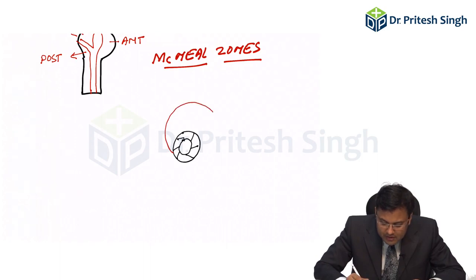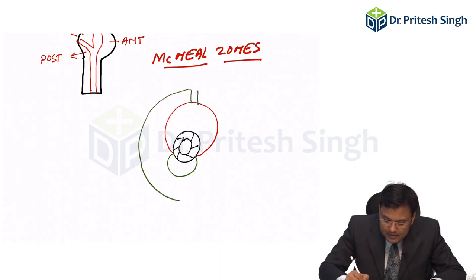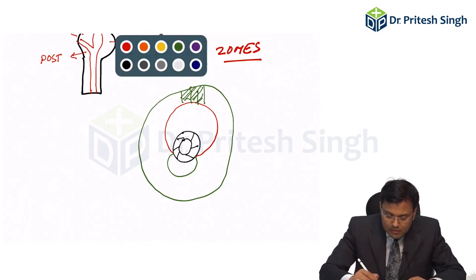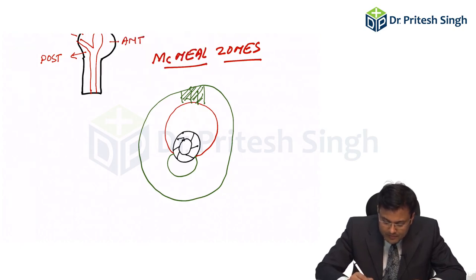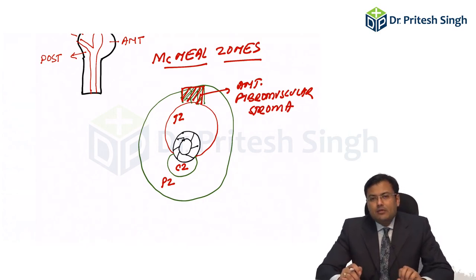Two-thirds of this urethra is covered by the transition zone. Usually, one-third is covered by the central zone. Peripherally, there is the peripheral zone. And here there is the anterior fibromuscular stroma. So what are these zones? The transition zone, the central zone, the peripheral zone, and the anterior fibromuscular stroma.